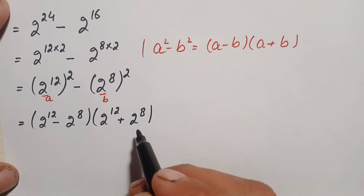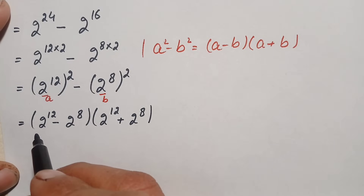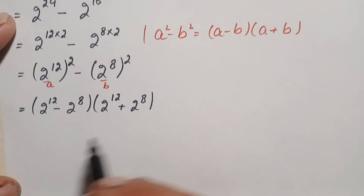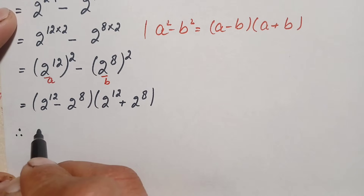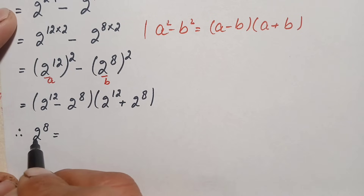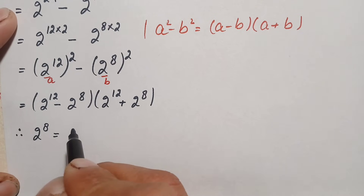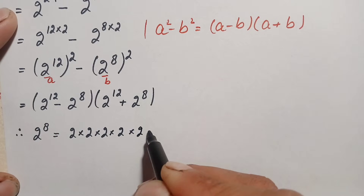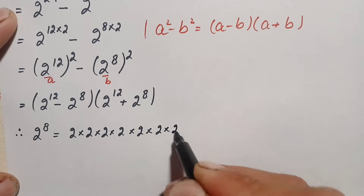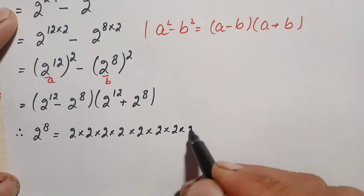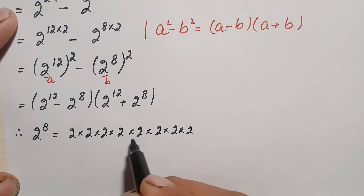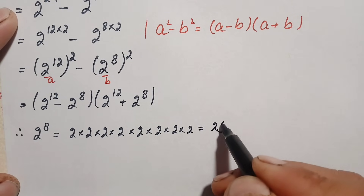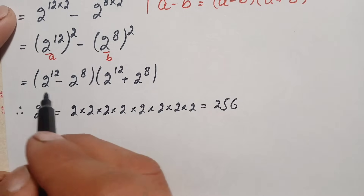Now we find the value of 2 raised to power 8 by multiplying 2 eight times: 2 times 2 is 4, times 2 is 8, times 2 is 16, times 2 is 32, times 2 is 64, times 2 is 128, times 2 is 256. So 2 raised to power 8 equals 256.